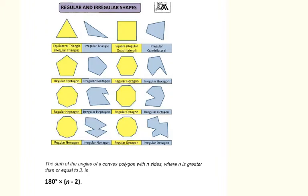With the quadrilateral and the triangle they have special names: an equilateral triangle is your regular triangle, and a square is your regular quadrilateral. You're going to want to know these names and have them memorized — know that a nonagon has nine sides, a heptagon has seven sides, etc.